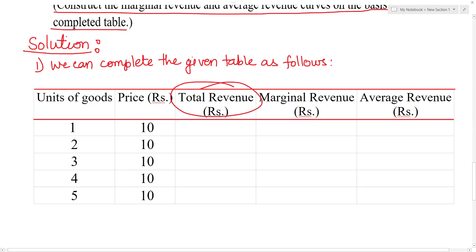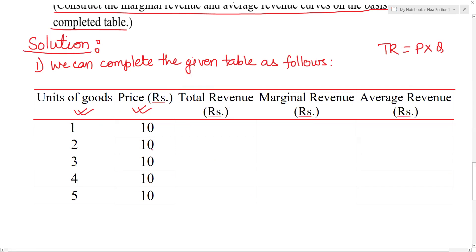We will complete the total revenue. The total revenue formula is: total revenue equals price multiplied by quantity. The price is given and quantity is given, so we multiply price and quantity.